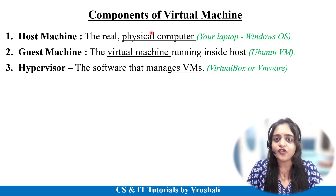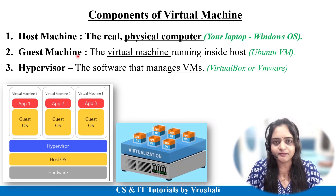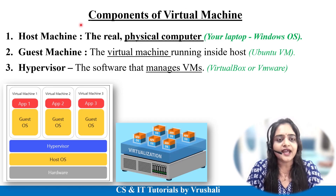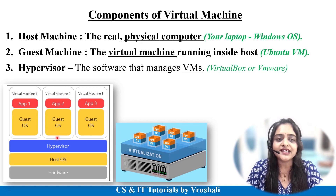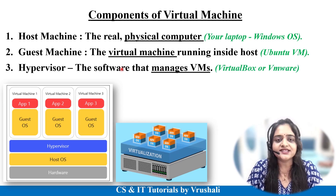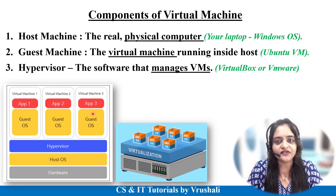Our next topic is: what are the different components of a virtual machine? There are three main components: host machine, guest machine, and hypervisor. Host machine means your real physical computer — for example, the Windows OS on your laptop. On that host machine you can install multiple virtual machines like Ubuntu, Linux, and Fedora, which are called guest operating systems. The hypervisor manages all the virtual machines; softwares like VirtualBox and VMware efficiently provide hardware and memory resources to each virtual machine.